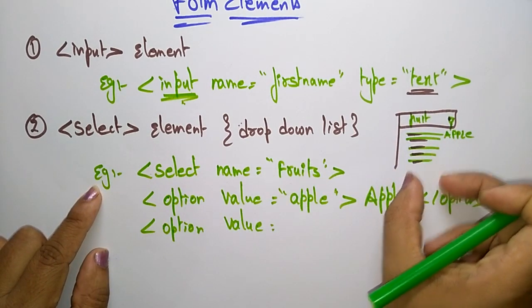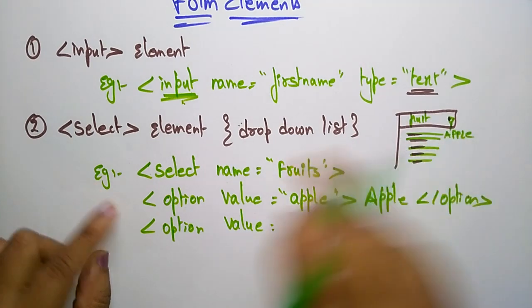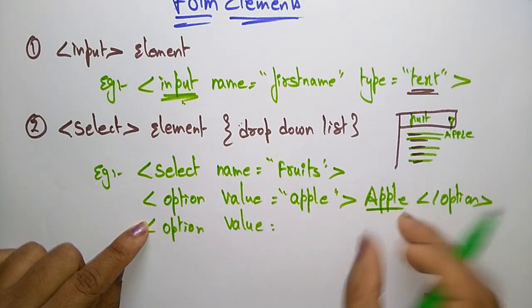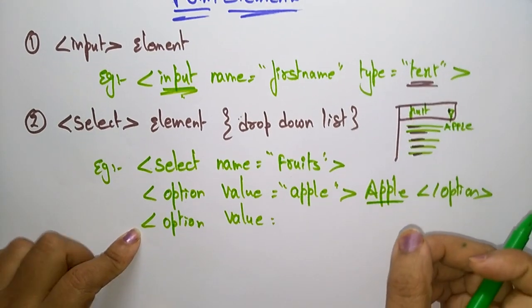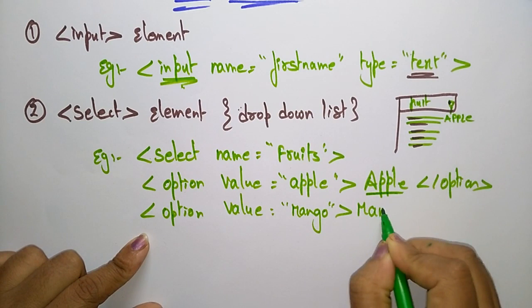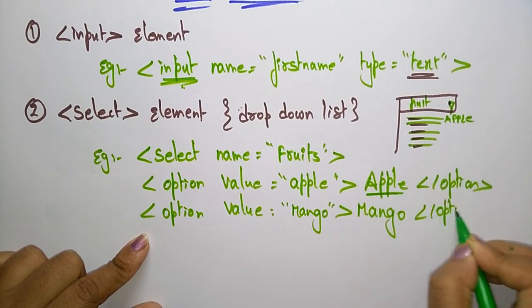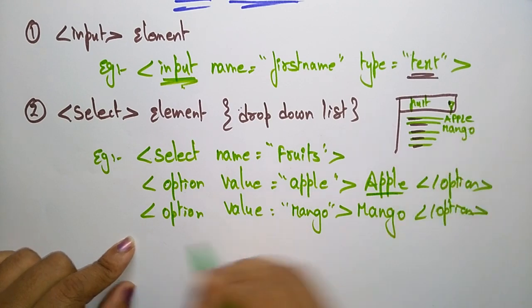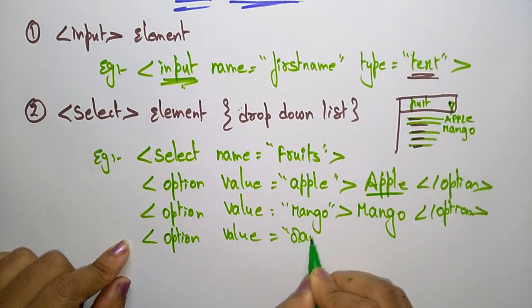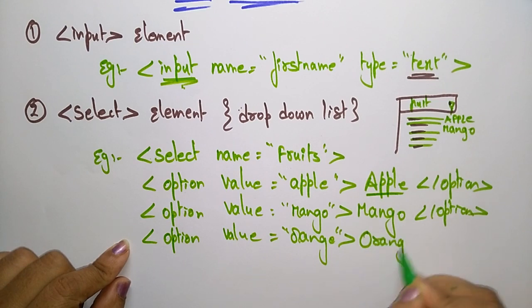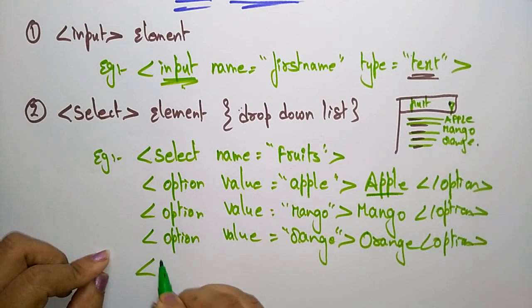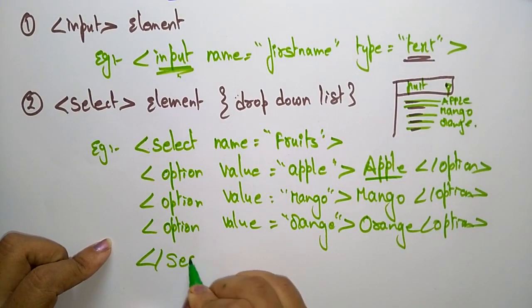Whenever you click, a drop-down list appears using the select command. You enter values using the option tag: option value equal to 'apple', then option value equal to 'mango' — mango will appear in the drop-down list. Similarly, option value equal to 'orange' — orange will also appear. Finally, after entering all values, close the select tag.